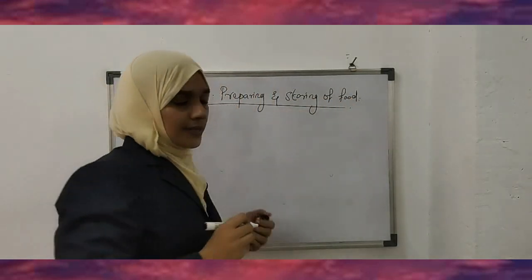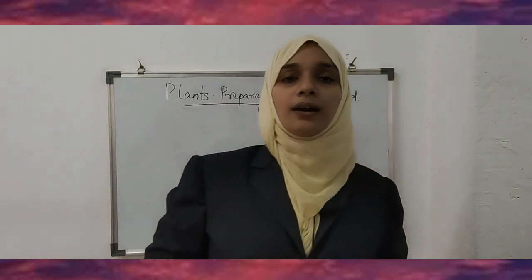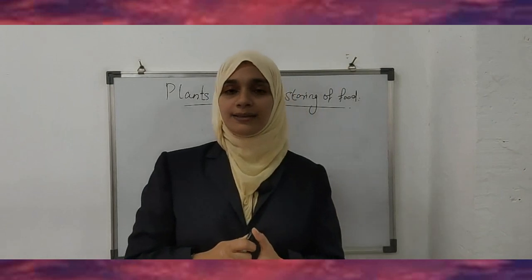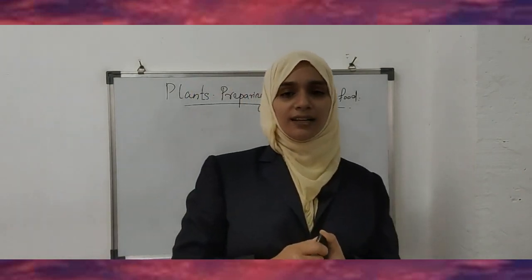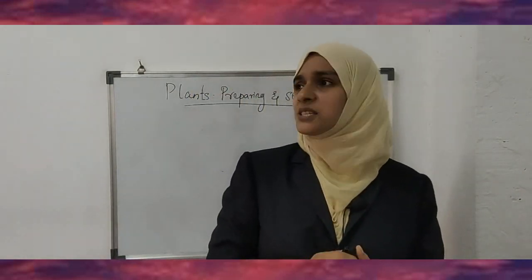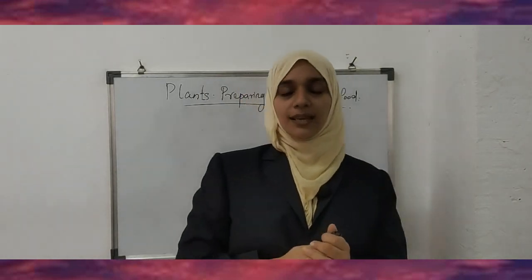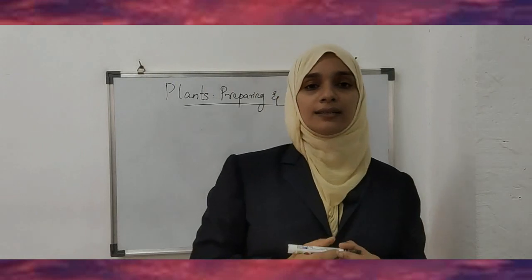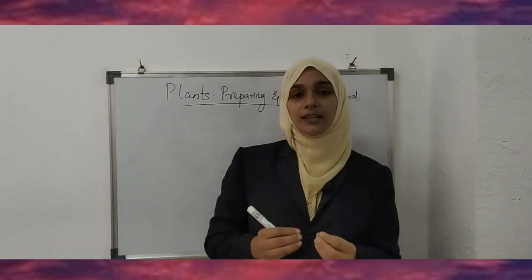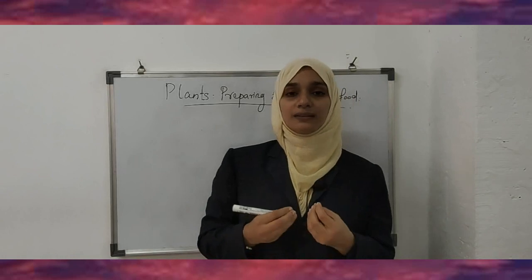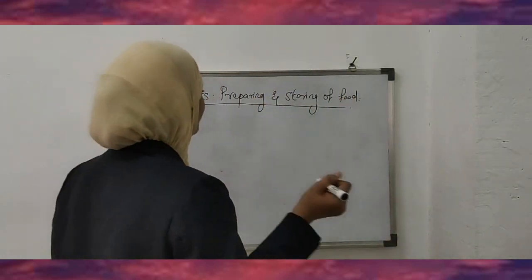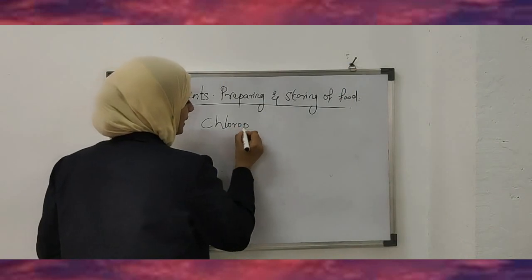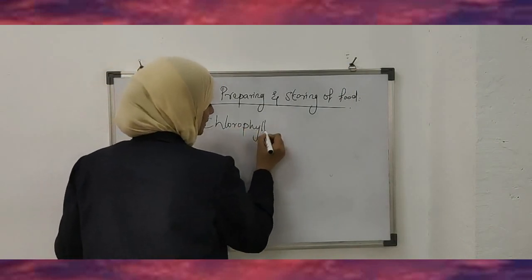As you all know, most plants are green in color. Have you thought about why plants have a green color? Yes, there is a reason behind this green color. This green color is due to a green pigment called chlorophyll. Chlorophyll is the pigment that gives green color to the leaves.